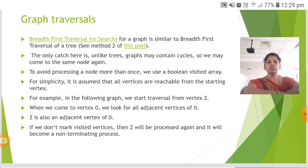When we come to vertex 0, we look for all adjacent vertices of it. So 2 is also an adjacent vertex of 0. If we don't mark visited vertices, then 2 will be processed again and it will become a non-terminating process.